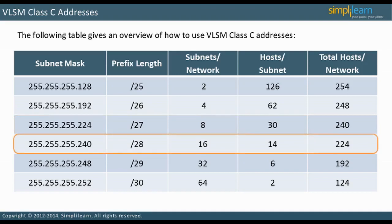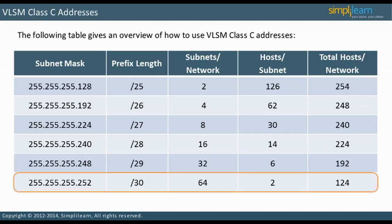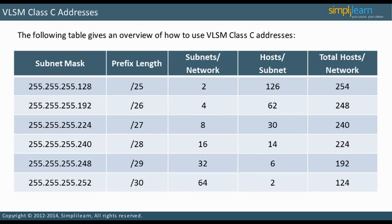With a mask of 255.255.255.240, a slash 28 prefix length, there will be 16 subnets with 14 usable hosts per subnet, for a total of 224 usable hosts. With a mask of 255.255.255.252, a slash 30 prefix length, there will be 64 subnets with two usable hosts per subnet, for a total of 128 usable hosts. Note that as the subnet number increases, the usable host number decreases, because two addresses are reserved each time another subnet is created.